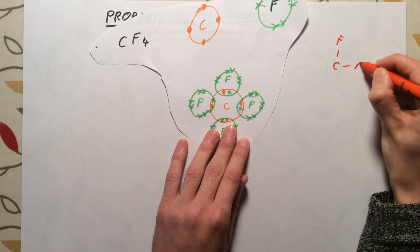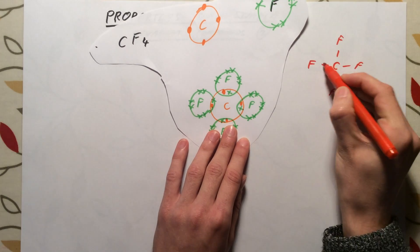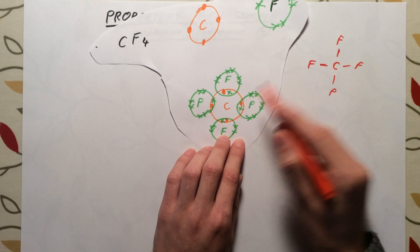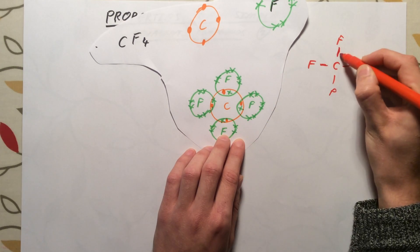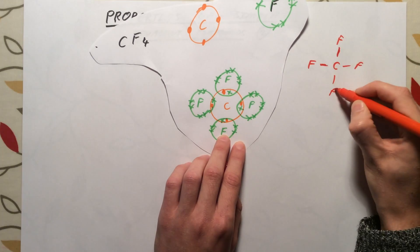C with four Fs around that. So it's a simplified representation of this dot and cross diagram, where each of these single lines here represents a pair of electrons shared between the atoms.